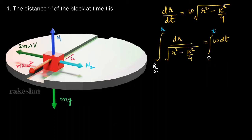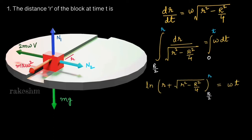When time is 0, the block was placed at R/2 from the center. We need to find r as a function of time. The integration of dr / √(r² - R²/4) is ln(r + √(r² - R²/4)). Putting that here with the lower and upper limits equals ω times t.